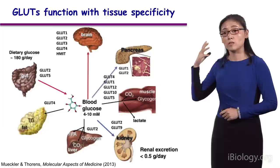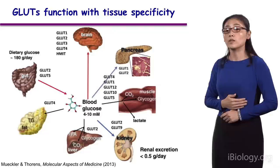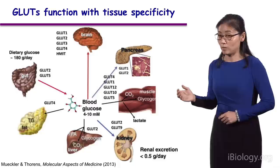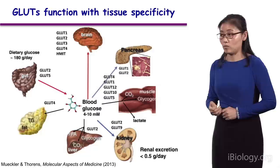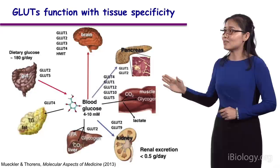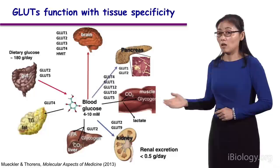As summarized here, GLUT1 functions in brain and red blood cells. GLUT2 is for liver. GLUT3 is also called neuronal glucose transporter, indicating that it functions in neurons. And GLUT4 is very famous — it takes glucose into adipocytes and muscle cells. These are the four most famous GLUTs: GLUT1, 2, 3, and 4. For the other 10 different isoforms, unfortunately, for some of them their substrates remain uncharacterized.